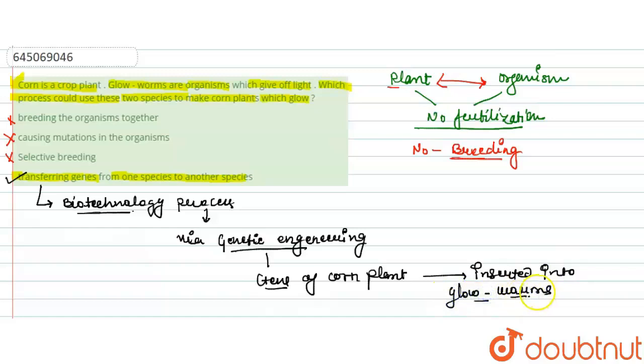Which is the organism, or vice versa, we can insert the gene of glowworms into the corn plant. So here you can see that the correct answer will be option D, that is transferring gene from one species to another species. For this question, this particular option will be correct. Thank you.